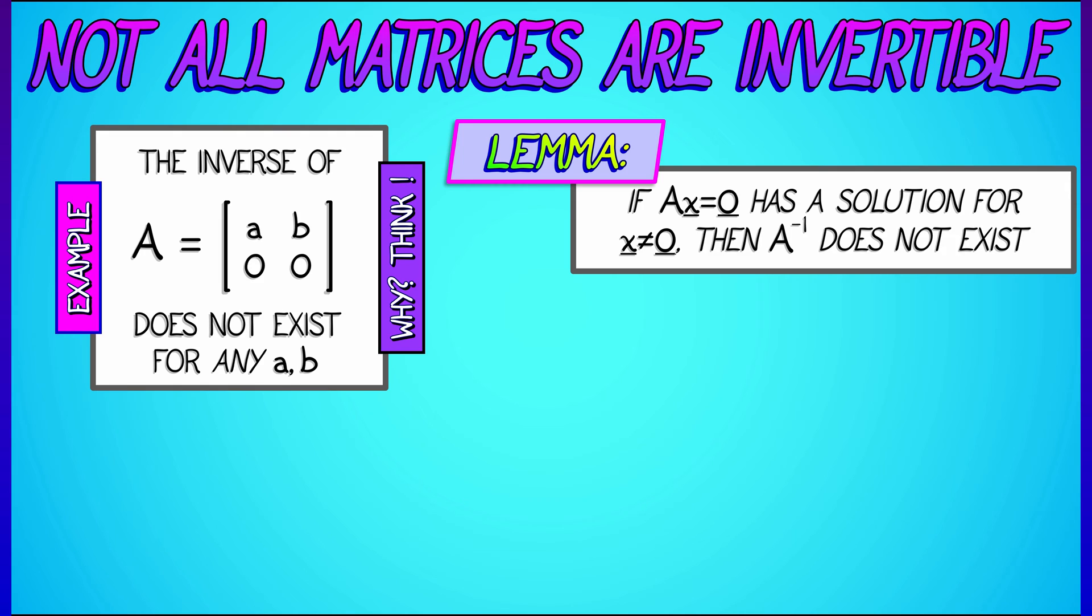Here's a lemma. If the system Ax=0 has a solution for a non-zero vector x, then we can conclude that A is not an invertible matrix. And you could apply that to this previous example.